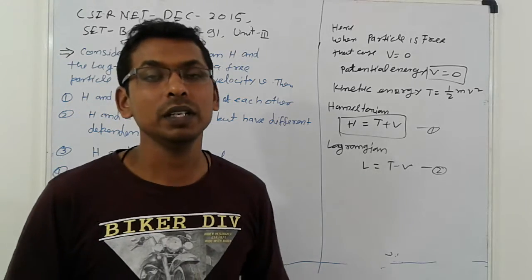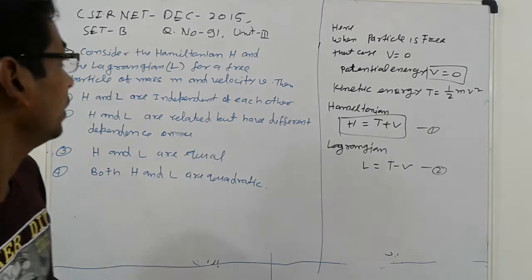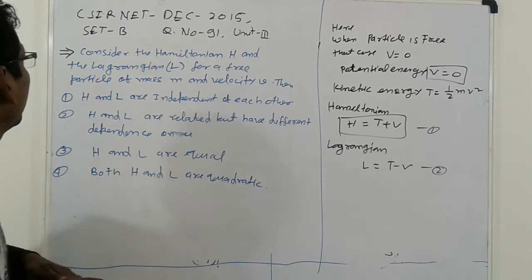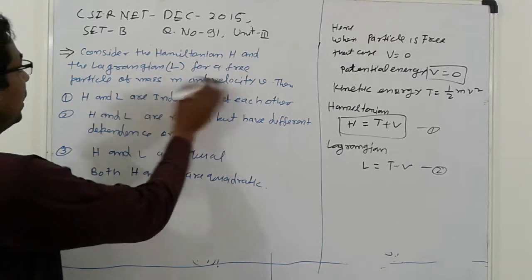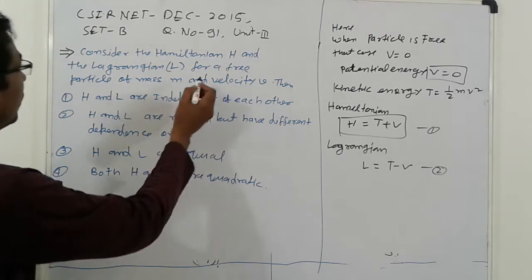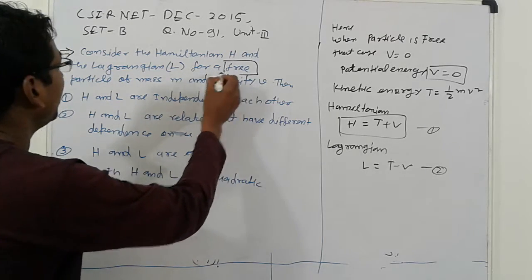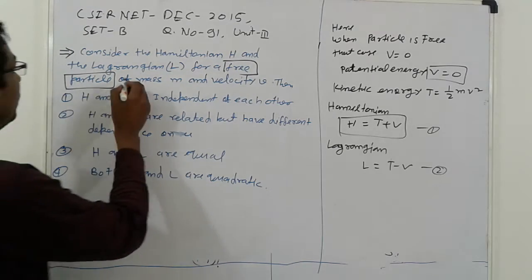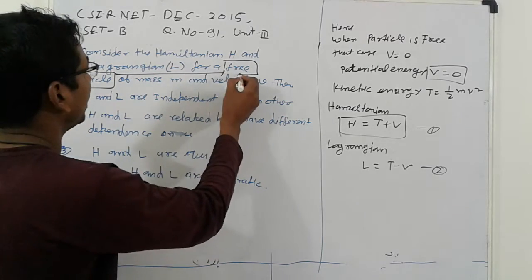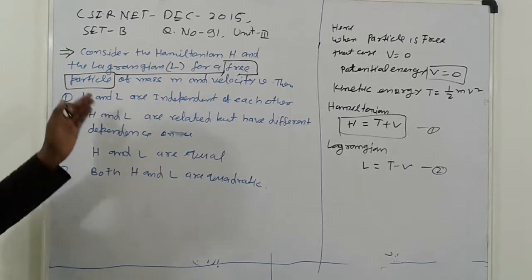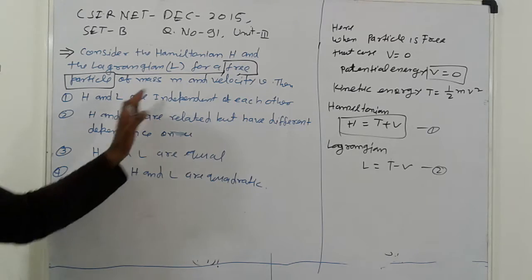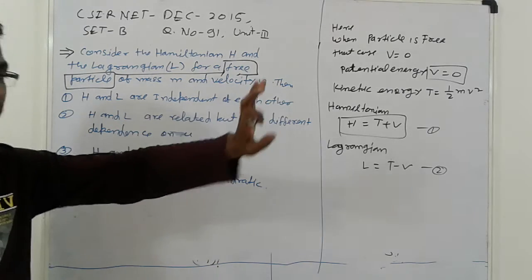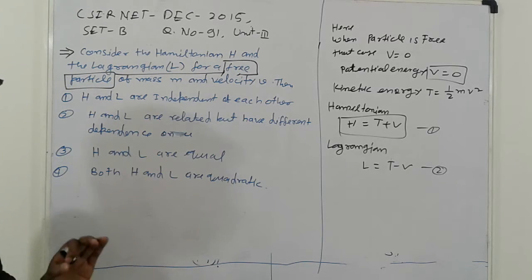So here the problem is: Consider Hamiltonian as given, H = ½mv². Here this is a free particle. It is clear from the problem that this is a free particle. m is mass and velocity v is given.